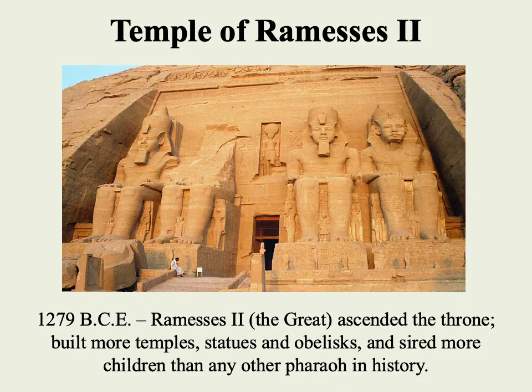Finally, we should know the individual who — possibly because he's referenced in the Bible — might be the most famous Egyptian pharaoh of all time: Ramses II, or the Great, who ascended the throne in 1279 BCE. He was pretty effective as a pharaoh, with a lot going on in terms of the beautification of ancient Egypt: building temples, statues, and obelisks.